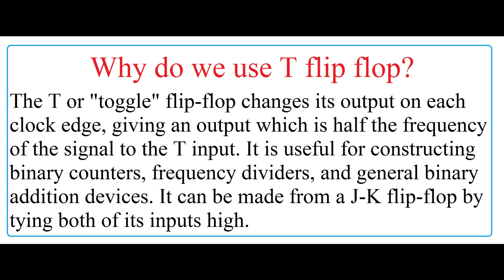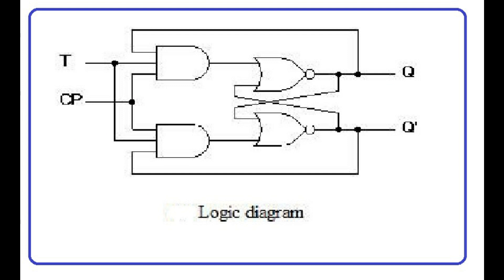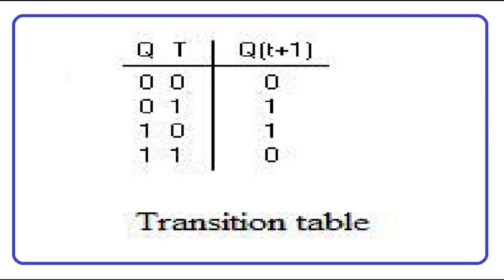Why do we use T flip-flop? The T or toggle flip-flop changes its output on each clock edge, giving an output which is half the frequency of the signal to the T input. It is useful for constructing binary counters, frequency dividers, and general binary addition devices. It can be made from a JK flip-flop by tying both of its inputs high.